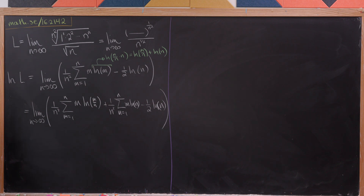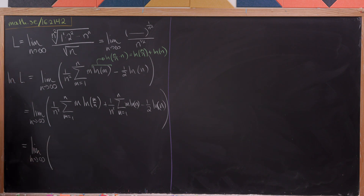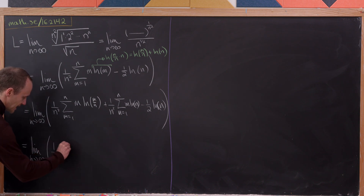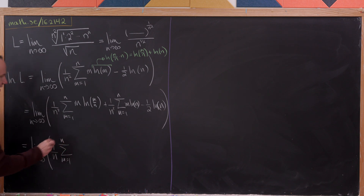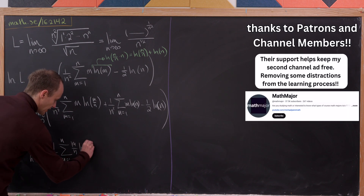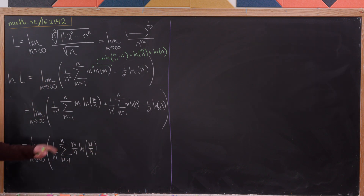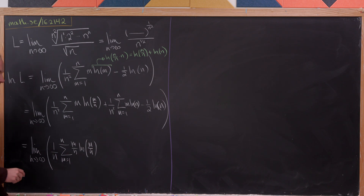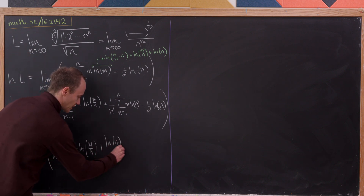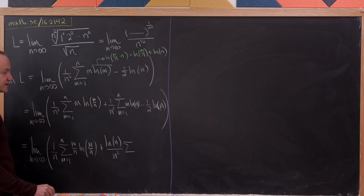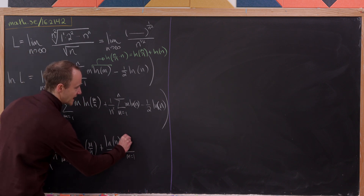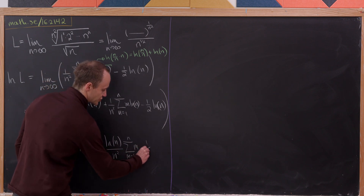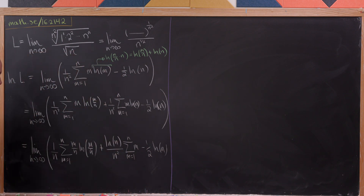Now let's do a rewriting step that pushes us toward our goal. We've got the limit as n goes to infinity of 1 over n times the sum as m goes from 1 to n of m over n times the natural log of m over n. The reason to do that is to get a multiplier that looks like what's inside of the logarithm — we can think of this sum as n terms of m over n. Then we observe that the natural log of n is a constant with respect to the sum, so we can pull it out, leaving natural log of n over n-squared times the sum as m goes from 1 to n of m, minus one-half natural log of n.